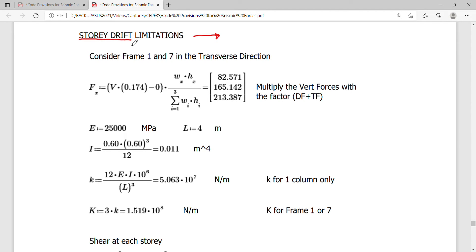Story drift limitation is a way of controlling the drift or lateral story drift expected on a building. I have here a structure and I want to look at how the structure will actually move laterally. This is called story drift or lateral drift, normally taken at the top part of your floor.